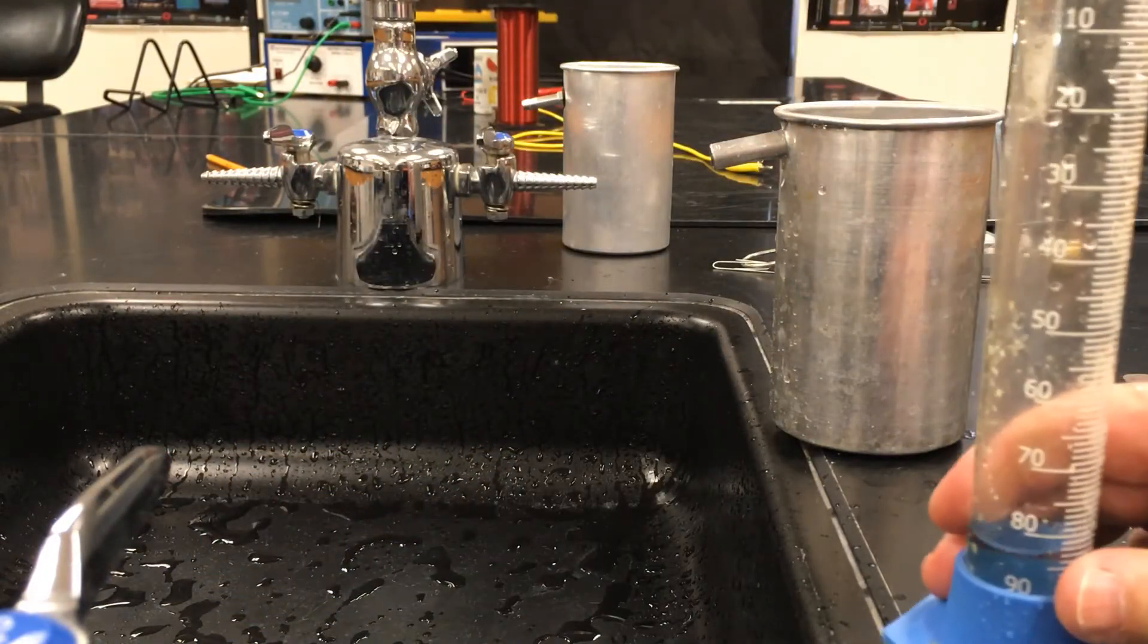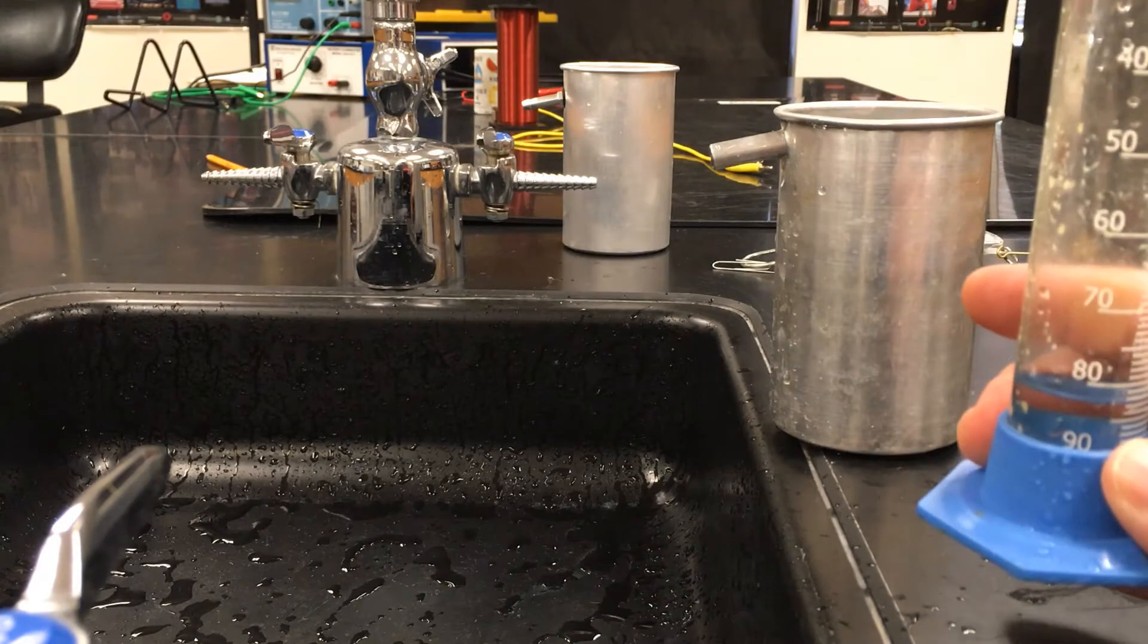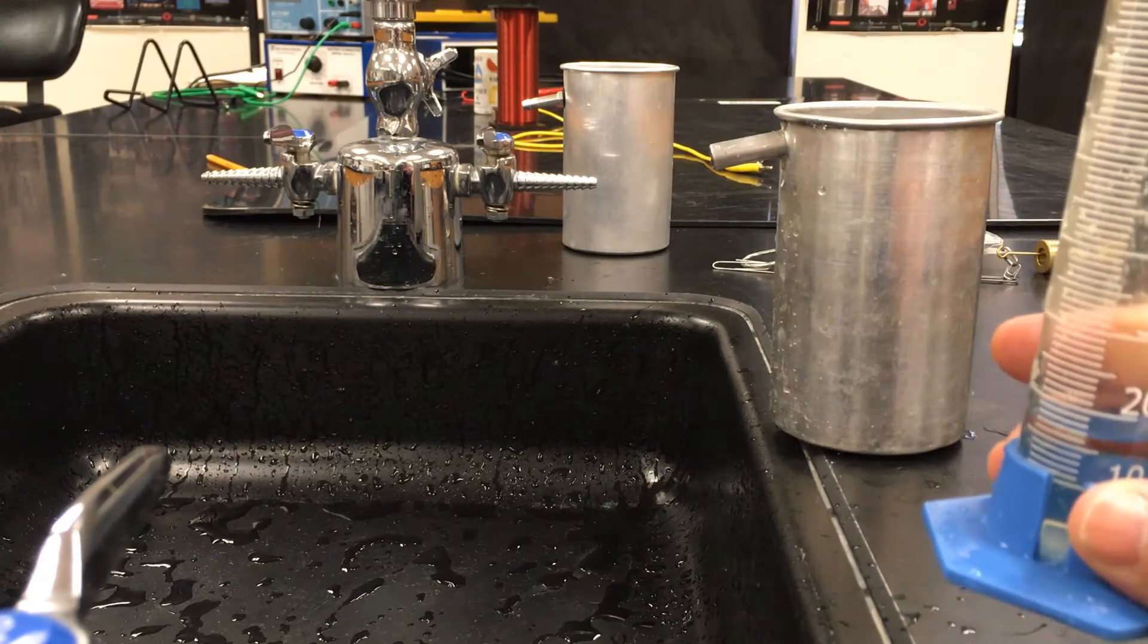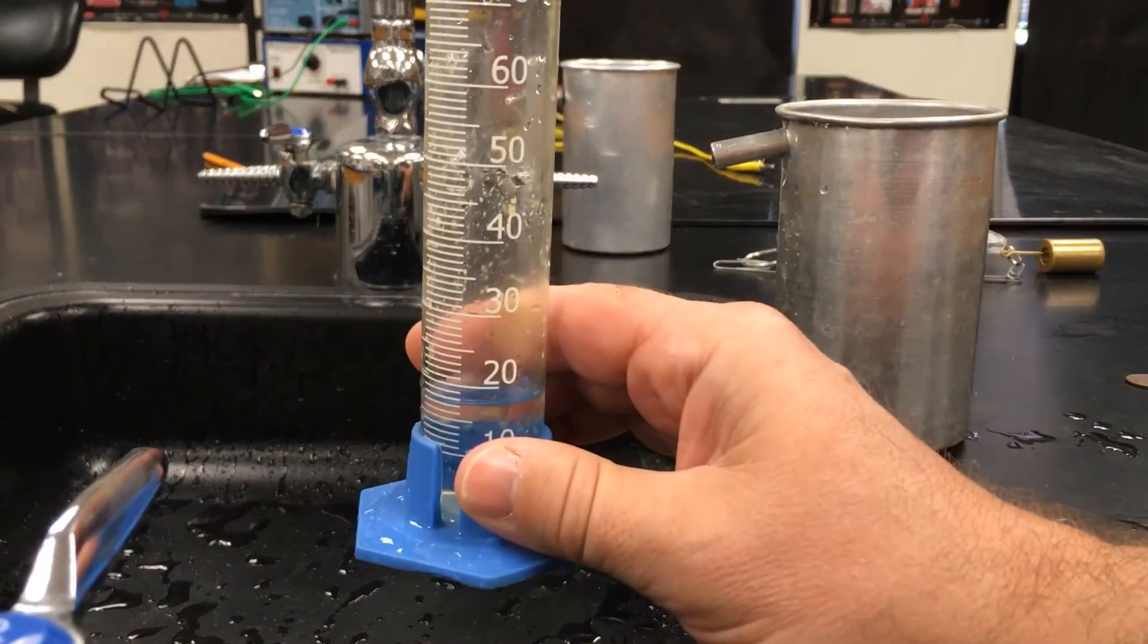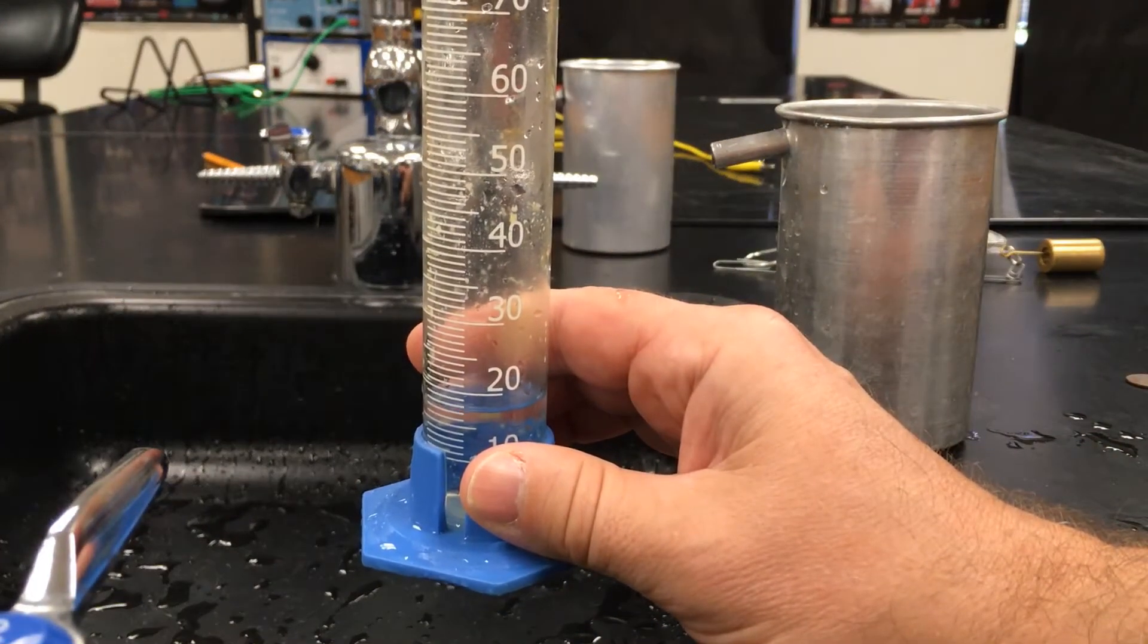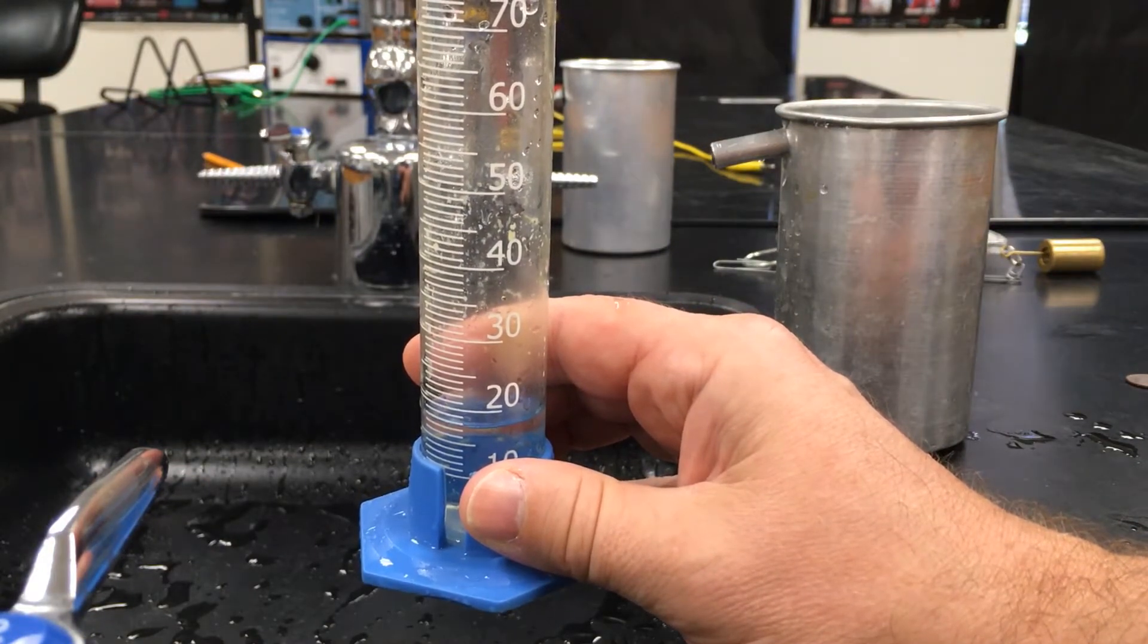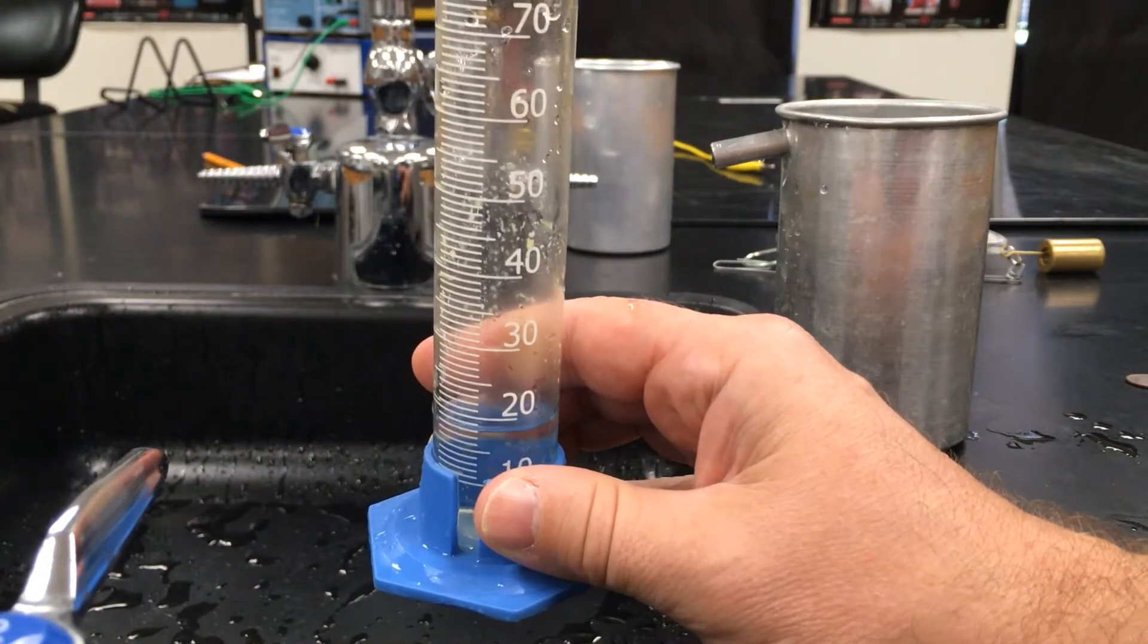And it displaced roughly, where's the other? There it is. Less than 20, less than 20 milliliters. It's like 17 milliliters, something like that, 18 milliliters. Just by the way, hopefully you remember that one milliliter of water weighs one gram.